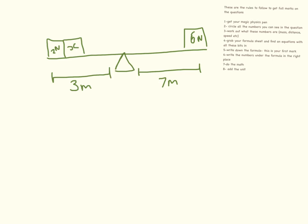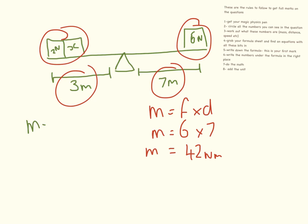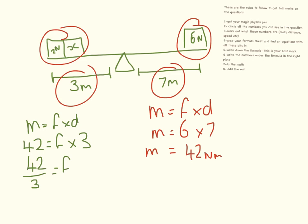This one is slightly tricky because there are two things on one side — but we treat it exactly the same. Circle all of the numbers. Moment equals force times distance: 6 newtons times 7 metres equals 42 newton metres. On the other side: 42 equals the force times 3, so 42 divided by 3 equals 14 newtons. But because we already have 2 newtons shown, x equals 14 minus 2, which equals 12 newtons.